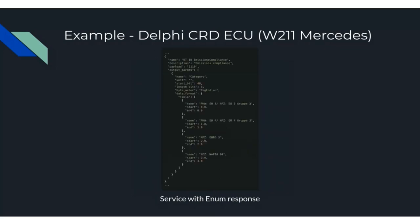There are also enums, found within the CBF file and the ODX specification, where a value can be mapped to a word or definition. In this case we've got an 8-bit one-byte value mapped to a table which dictates the emissions regulation that the ECU matches.